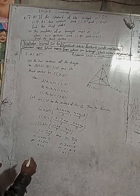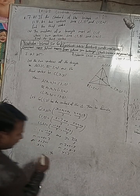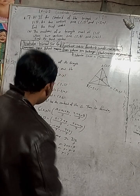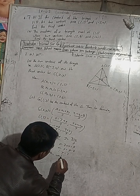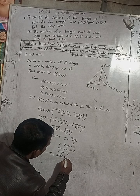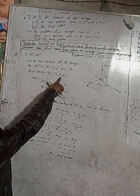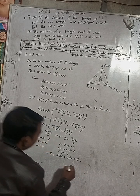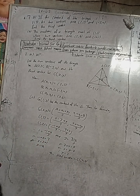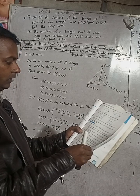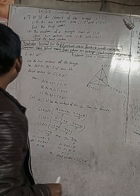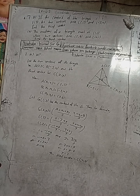Therefore the third vertex is (4, 2). Let me check the answer in the book — the answer in the book is (4, 2). Correct! So this is the solution for the first part. I cannot solve 7b right now because of time, as I have to go to school.